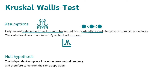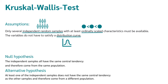The null hypothesis is that the independent samples all have the same central tendency and therefore come from the same population — in other words, there is no difference in the rank sums. The alternative hypothesis is that at least one of the independent samples does not have the same central tendency as the other samples and therefore comes from a different population — in other words, at least one group differs in rank sums.